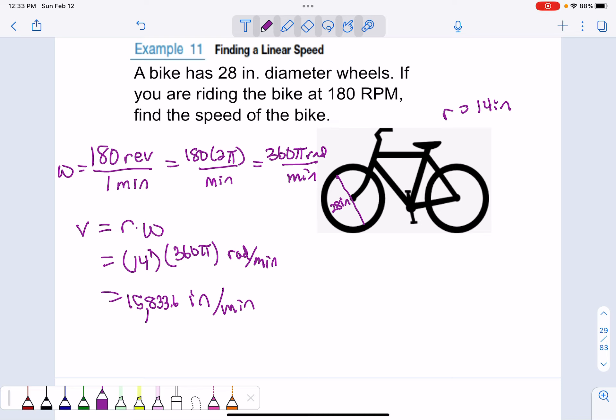Now if we're riding our bike and someone asks us our speed, we would not say I just traveled 15,833.6 inches per minute. They would say, how many miles per hour were you going? If you do that conversion, you would find that they were going roughly 15 miles per hour. There's something interesting there.